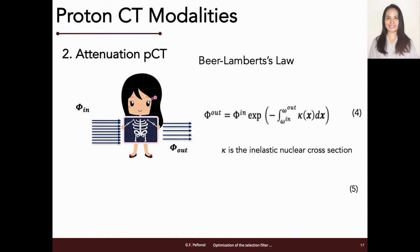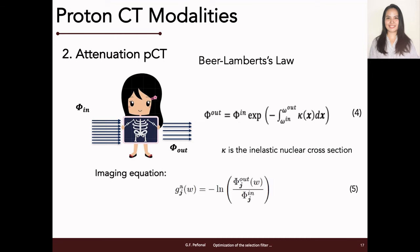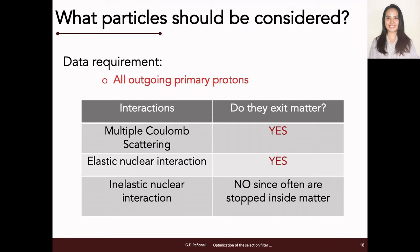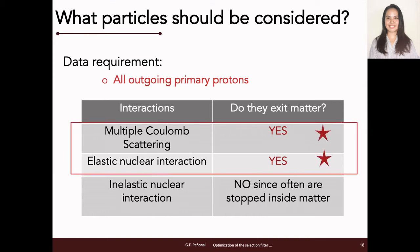For attenuation proton CT, we base our calculation on Beer-Lambert's law, expressed by Equation 4, where kappa is the inelastic nuclear cross-section, x is the penetration depth, and phi-in and phi-out are the entrance and exit proton fluences respectively. Rearranging gives Equation 5 — the imaging equation for this modality — wherein the negative logarithm of the ratio of exit to entrance fluences gives the projection values. To satisfy this equation, we only consider primary protons that successfully exit matter, leaving all secondaries filtered out; hence we need primaries that undergo multiple Coulomb scattering and elastic nuclear interaction.